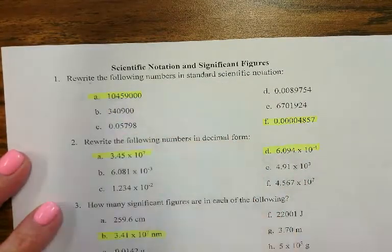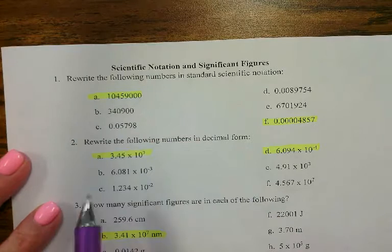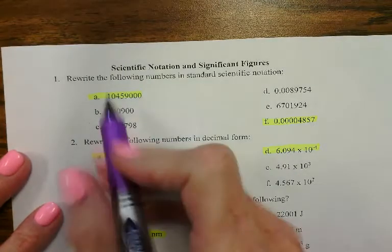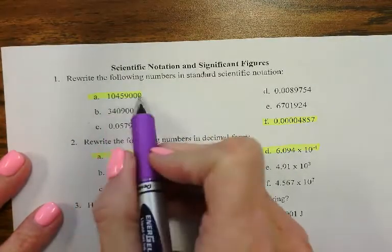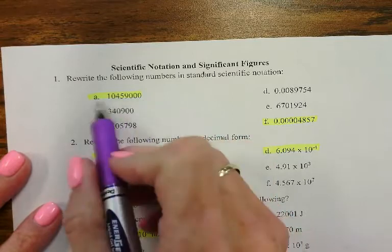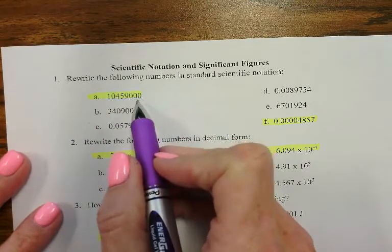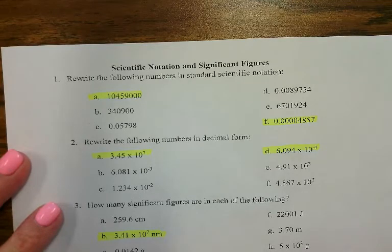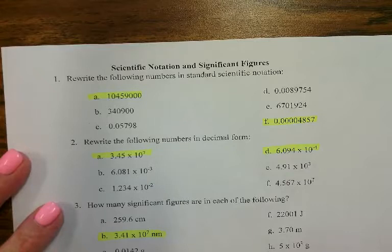Okay, so number one says rewrite the following numbers in scientific notation. In order for a number to be correct in scientific notation, it can only have one non-zero number in front of the decimal point.